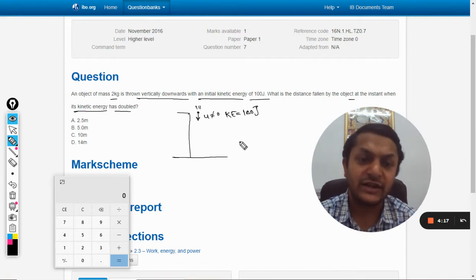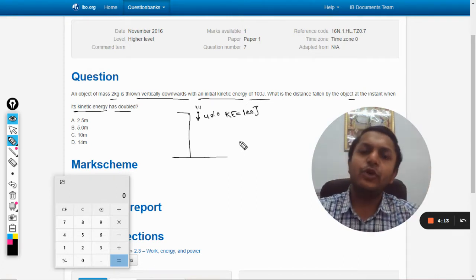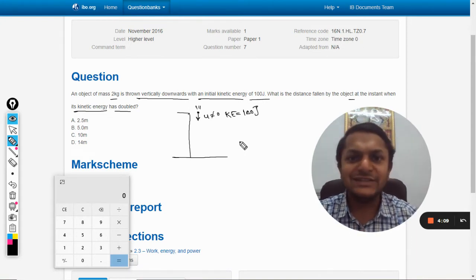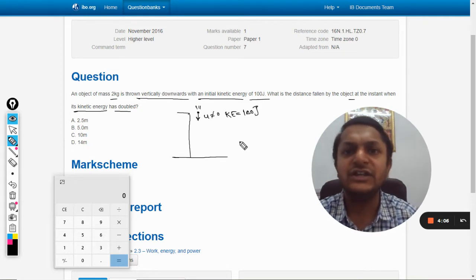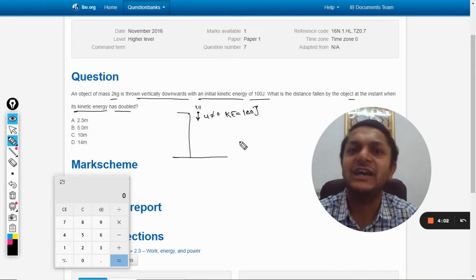When the body is descending down, the potential energy is getting converted into kinetic energy. So it says that the final position kinetic energy is doubled, it means 100 joule of more energy has been added into the kinetic energy.